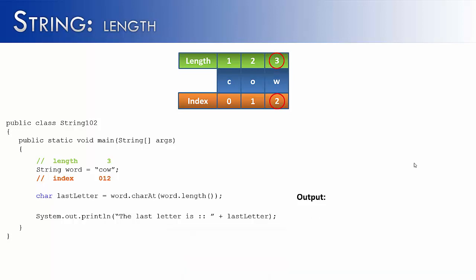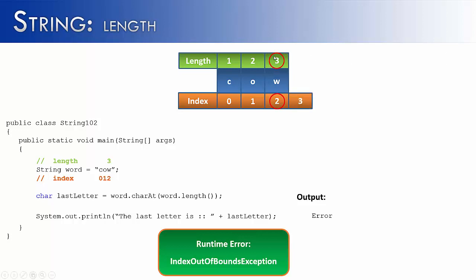So I've changed the code slightly. Instead of saying word.char at seven, I said word.char at word.length. And the length of cow is three. So if we ran this program right now, it would still give us an error. And hopefully you can see why. Because the length is three. And if we pass just the length by itself, it's always going to be one more than what the index is. So we're going to have to do something to the length in order to get our target index, which is two in this case.